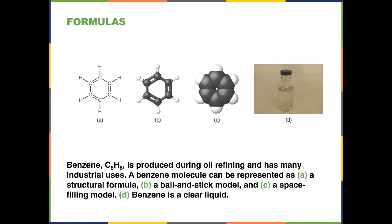Benzene is produced during oil refining and has many industrial uses. The benzene molecule can be represented in several ways: the structural formula is shown in A, the ball-and-stick formula in B, and the space-filling model in C. In the structural formula, you have two bars between some carbons and one bar between others, meaning some carbons are bound by two bonds and others by a single bond.